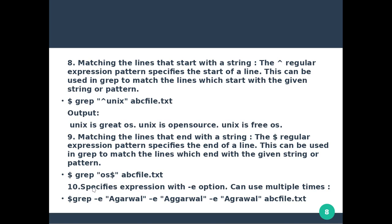So with grep, using the pattern 'os dollar' on abc file dot txt, we search for lines ending with 'os.' The matched lines ending with os are printed out.